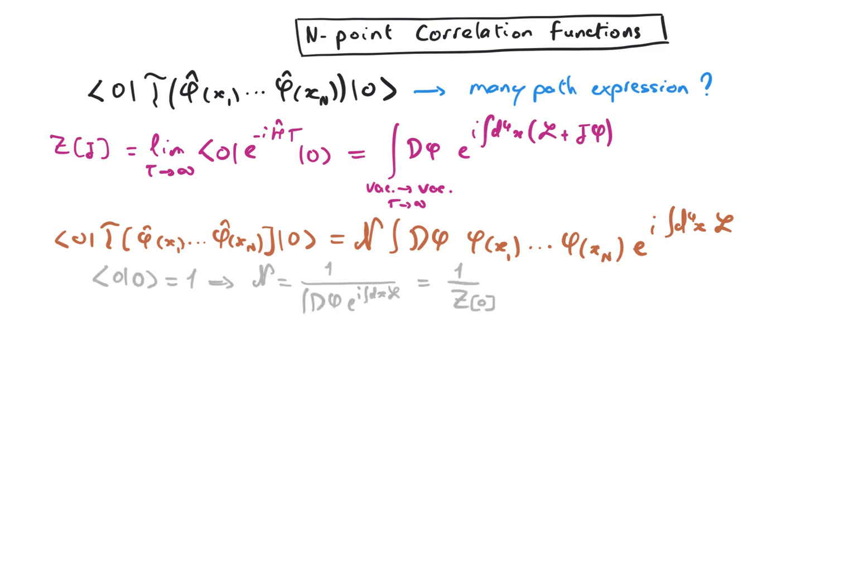You may wonder what happened to the evolution operator. In fact, it's hidden in the field operators themselves, which are written in the Heisenberg representation. So we are still going from vacuum far in the past to vacuum far in the future. But just in between, we are acting with some field operators at some given times.